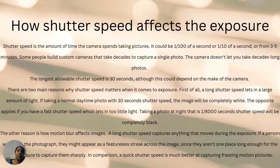Because they're not in one specific position for long, it doesn't give the camera enough time to capture the photo sharply — to absorb and sense the image. In comparison, a quick shutter speed is much better for freezing motion. You're better off with a quick shutter speed if you want to avoid the motion blur effect.